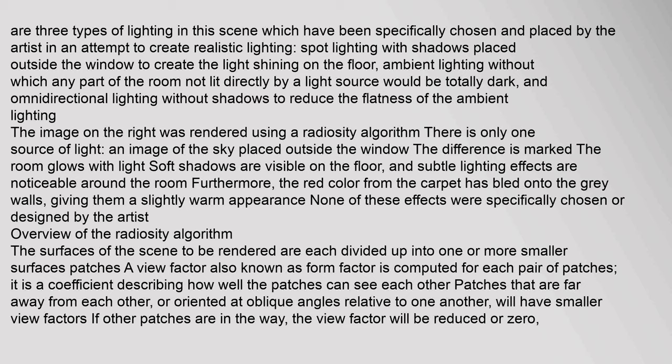The image on the right was rendered using a radiosity algorithm; there is only one source of light — an image of the sky placed outside the window. The difference is marked: the room glows with light, soft shadows are visible on the floor, and subtle lighting effects are noticeable around the room. Furthermore, the red color from the carpet has bled onto the gray walls giving them a slightly warm appearance. None of these effects were specifically chosen or designed by the artist.